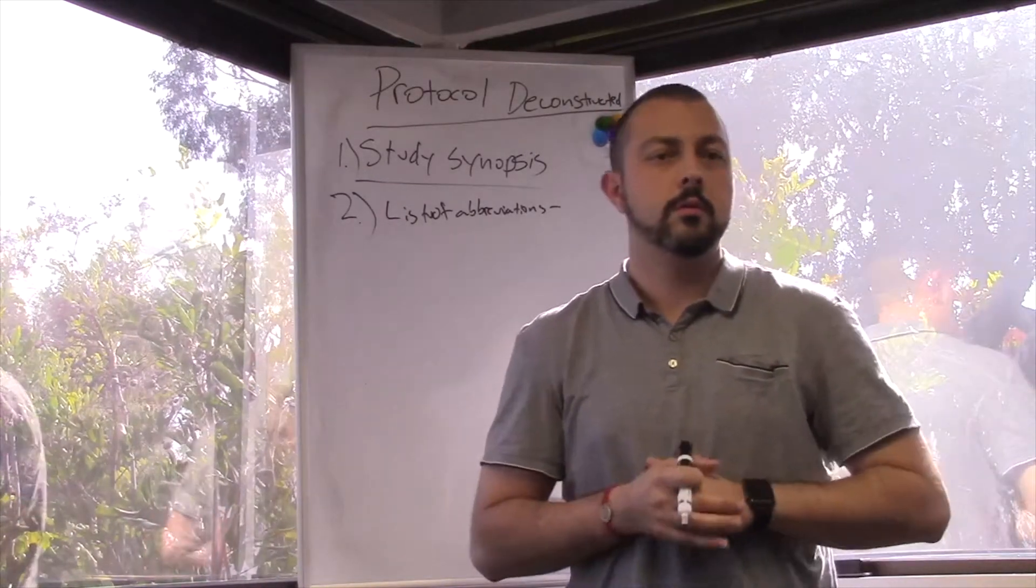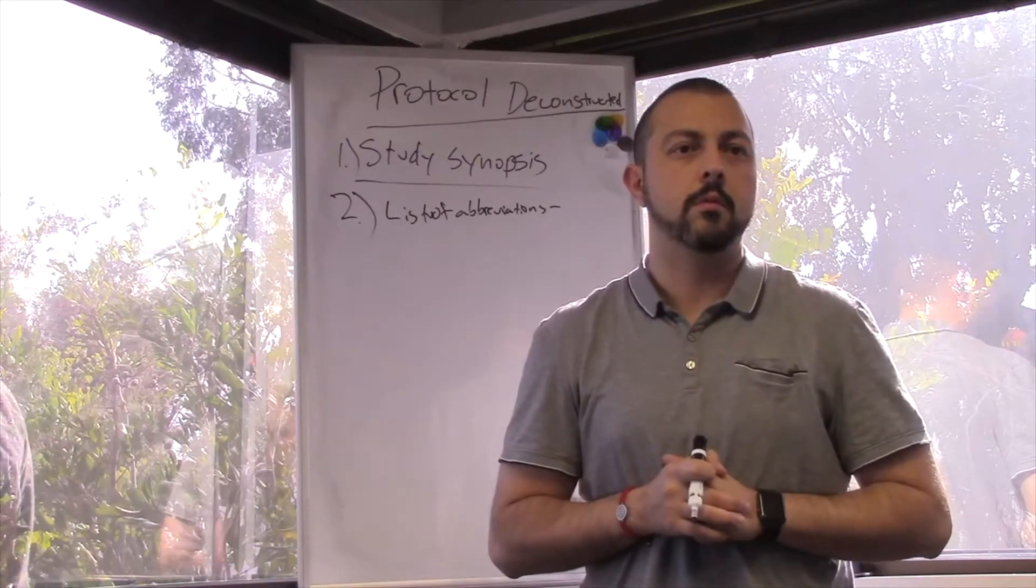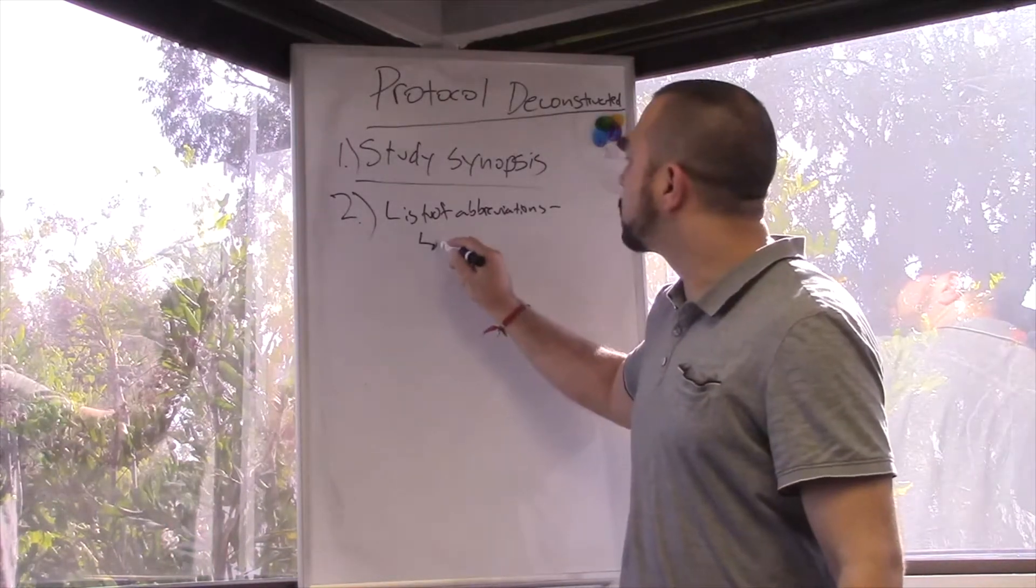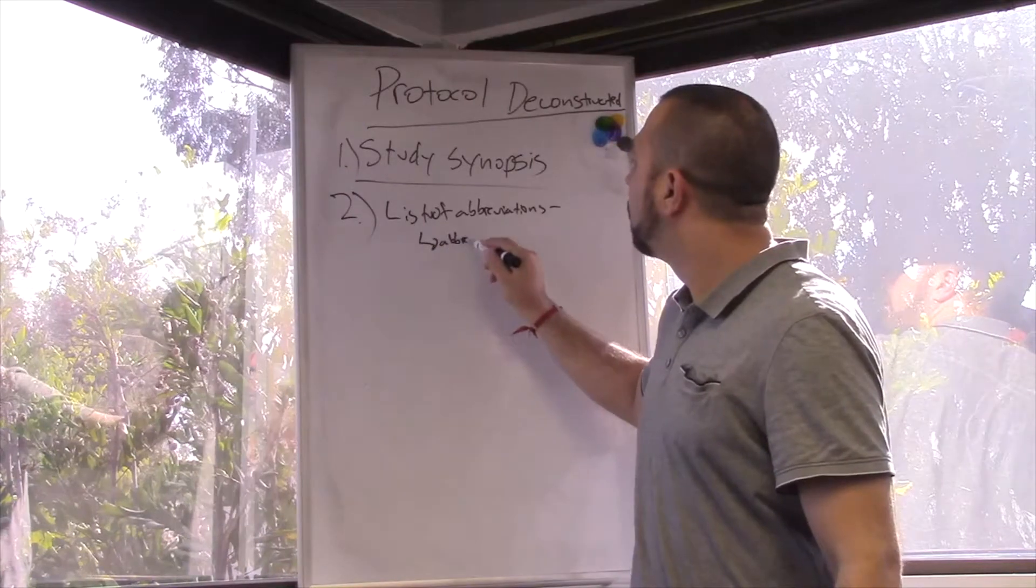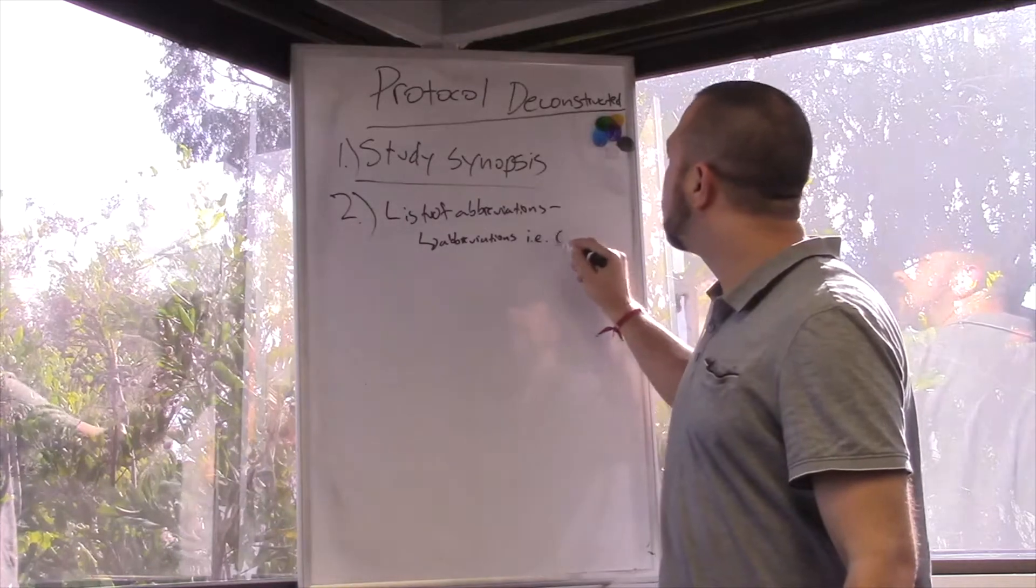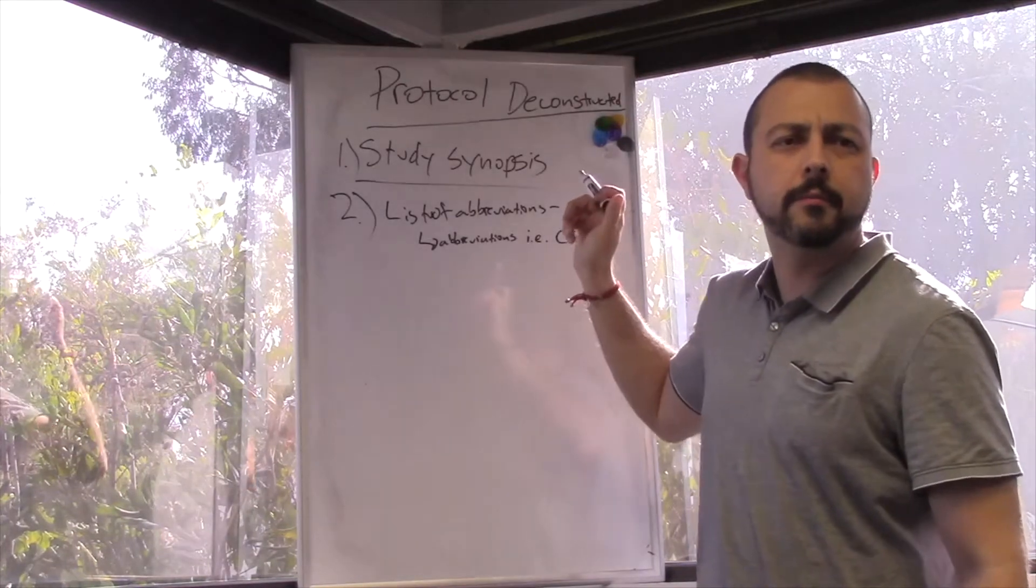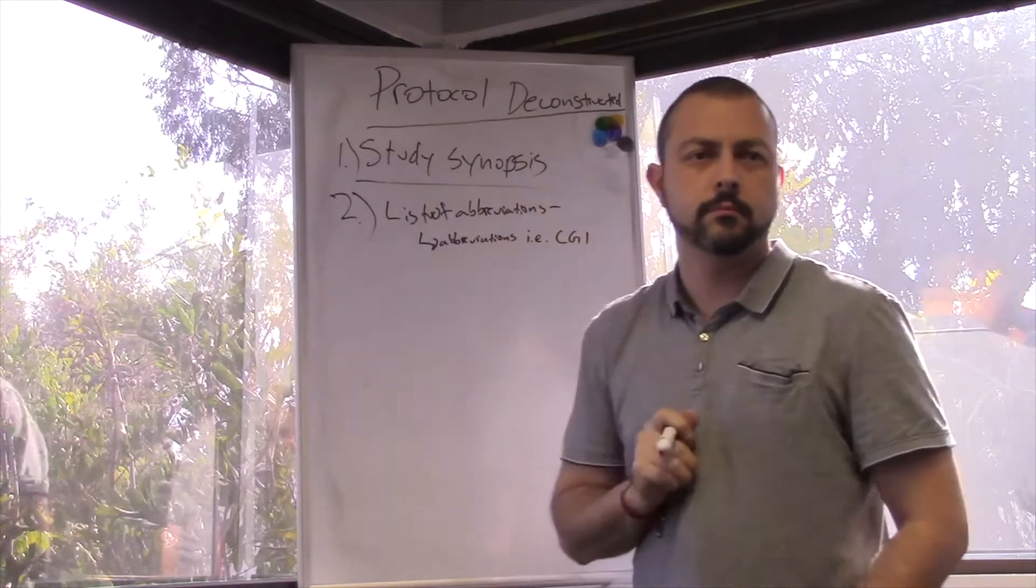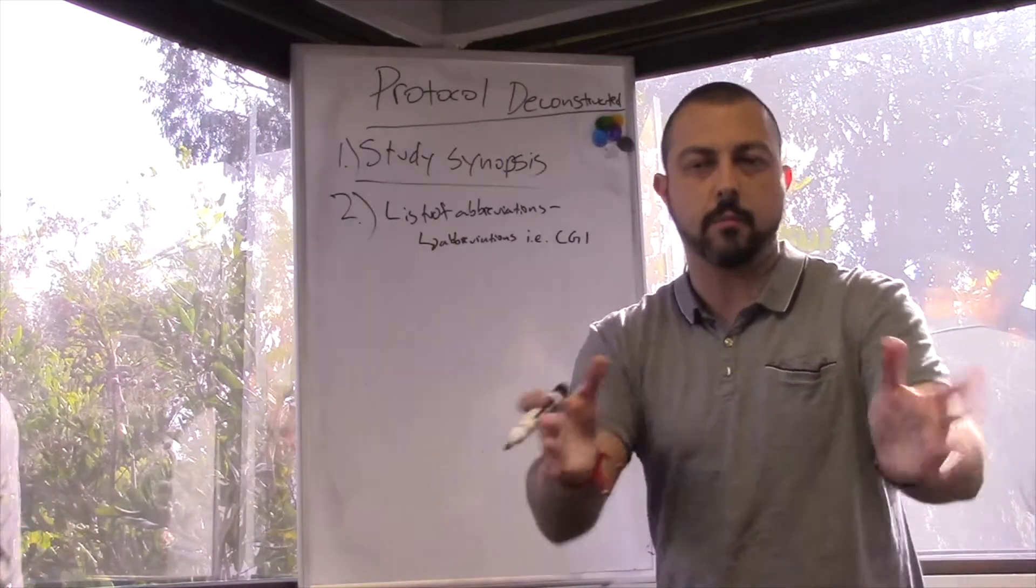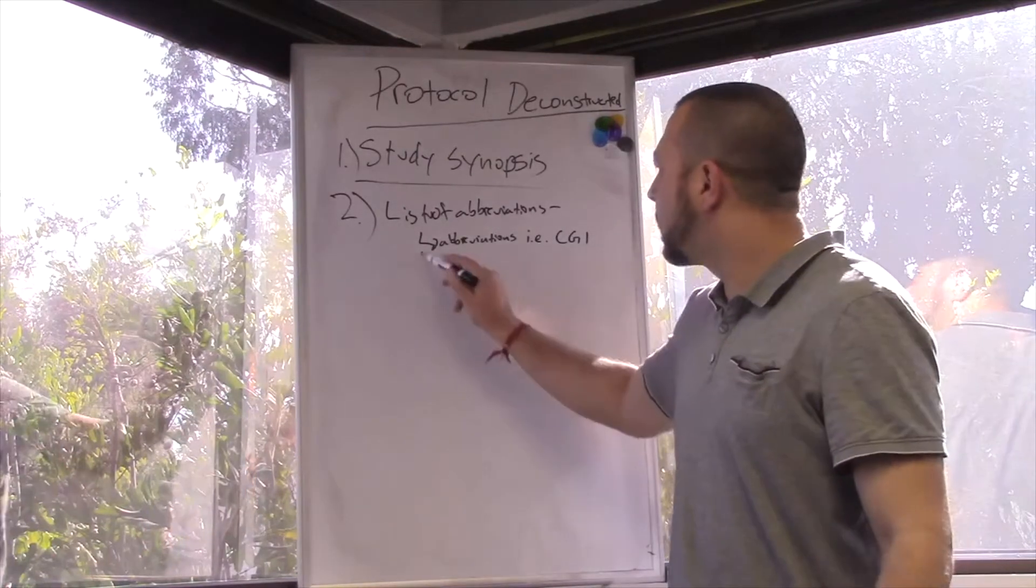But it would be, for example, the assessments are oftentimes abbreviated. So we're gonna say CGI, it'll tell you what the CGI is. So basically abbreviations, like everything that's abbreviated in the protocol, they'll give the full definition. Like CGI, it's Clinical Global Impression of Change. There's another abbreviation used in many Alzheimer's studies, MRI. Everyone probably knows what an MRI is, Magnetic Resonance Imaging.